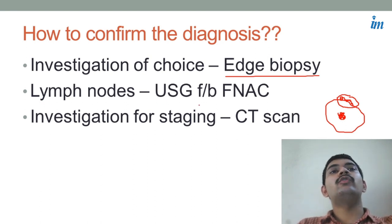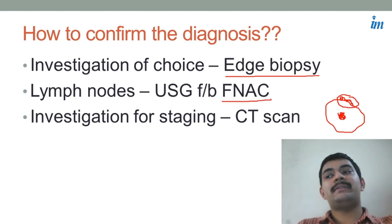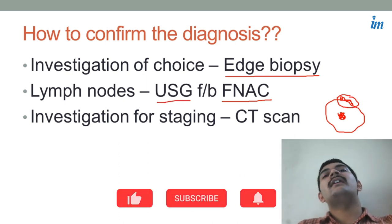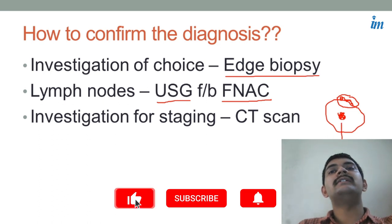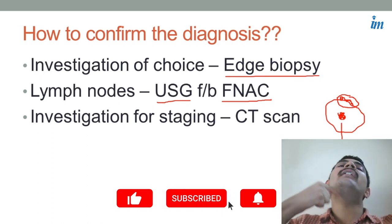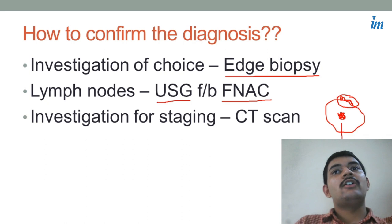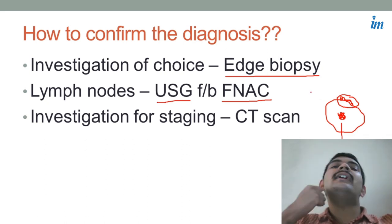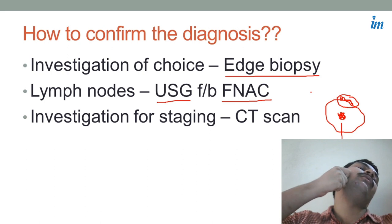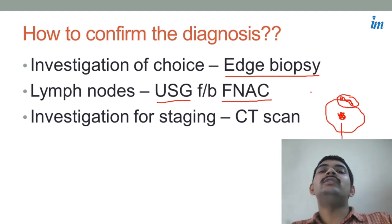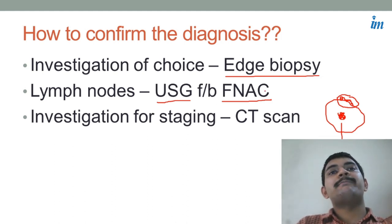Then you are going to do a FNAC — fine needle aspiration cytology — for lymph nodes, and you are going to do it ultrasound-guided. The reason for doing ultrasound even though you can see the ulcer is that we don't know how deep the ulcer is. If it is deep, going into the floor of the mouth, it will be difficult to stage the disease. So you take an ultrasound probe, move it over the area, and with the help of that ultrasound you take a needle and through that needle you take a specimen for histopathology. And then finally for staging you proceed to CT scan.